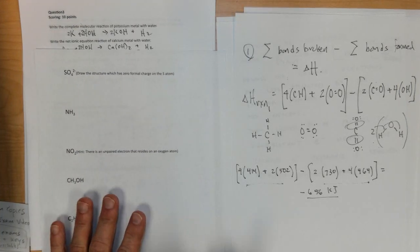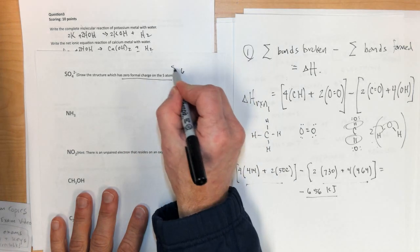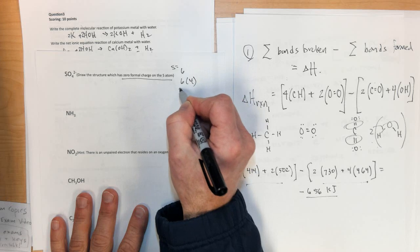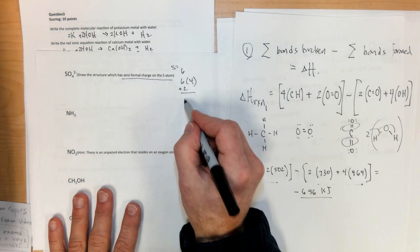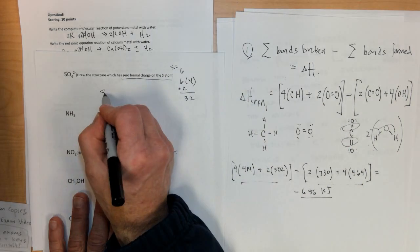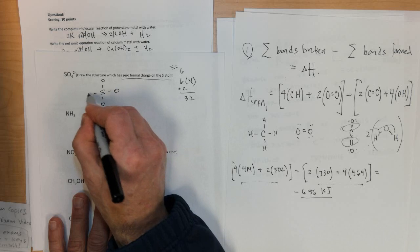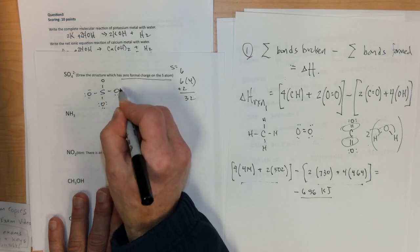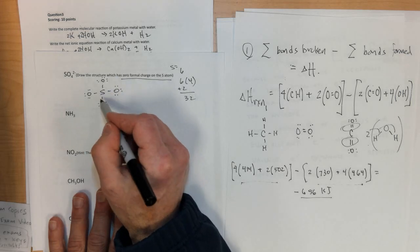More Lewis electron dot structure. Zero formal charge on sulfur means sulfur has 6. Oxygen is also 6 times 4 plus 2 more. So 24 plus 4 is 30, 32 electrons. Sulfur in the middle. Bond the oxygens around it. 2, 4, 6, 8, 10, 12, 14, 16, 18, 20, 22, 24, 26, 28, 30, 32. Uses them all up.